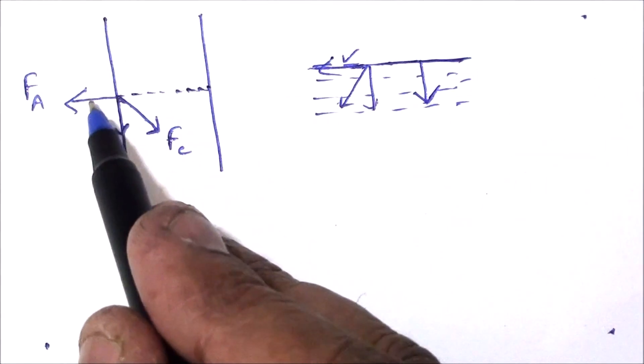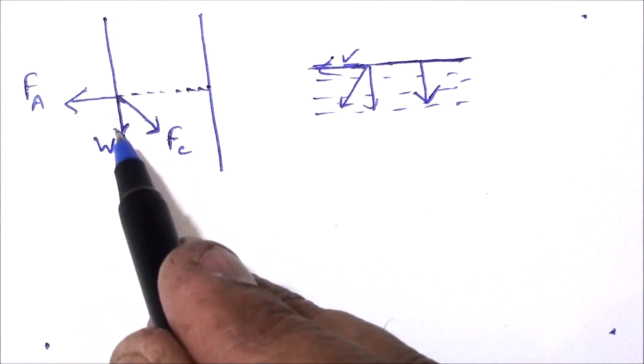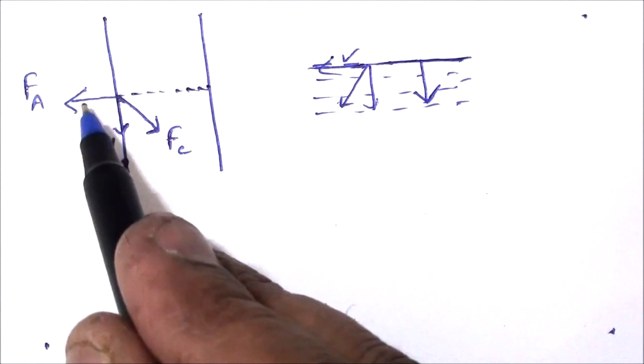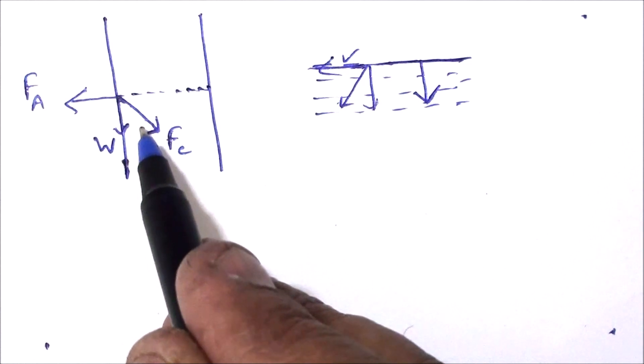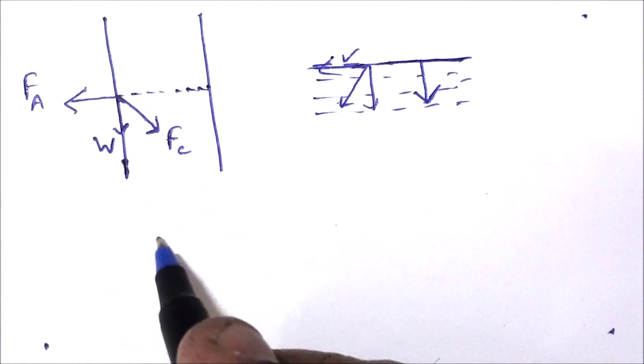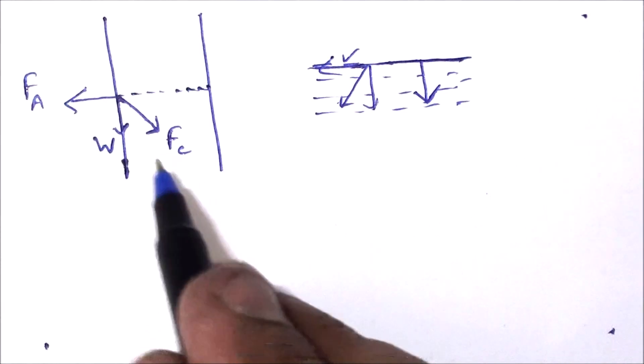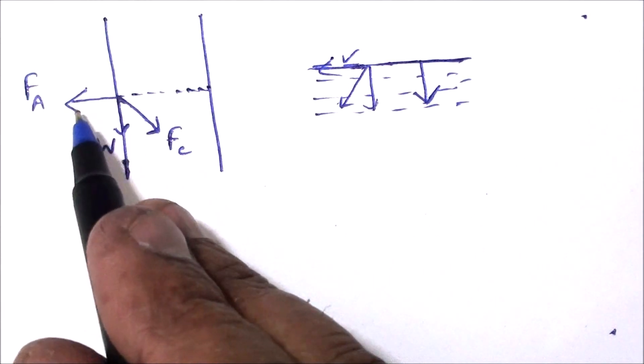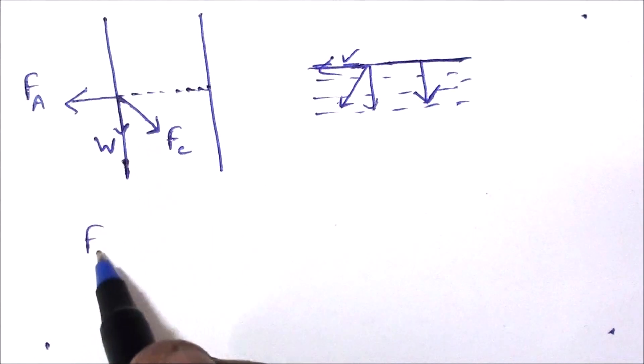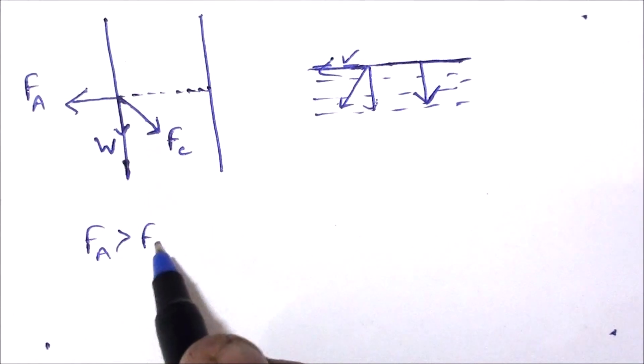Now here the liquid is at rest. So the resultant of these two forces and also the weight - however we can ignore the weight because of its small value - so the resultant of these two will determine the shape. Now there are two cases. Fc may be greater than Fa or Fa may be greater than Fc. Let us see what happens if Fa is greater than Fc.